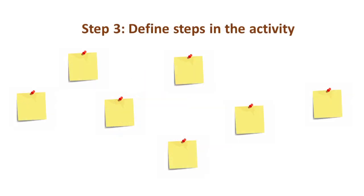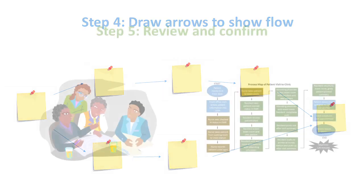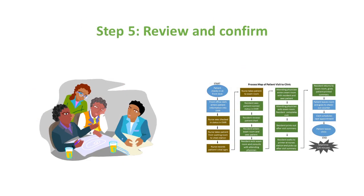Step three is to define as many key activities as you can in the process. Write down each activity on a card or a sticky note. When all activities are included, in step four, arrange the sticky notes in sequence and draw arrows to show the flow of the process. Step five: review the flowchart with others involved in the process, such as frontline clinicians, supervisors, and patients, to see if they agree that the process is drawn accurately. Edit the flowchart if needed.